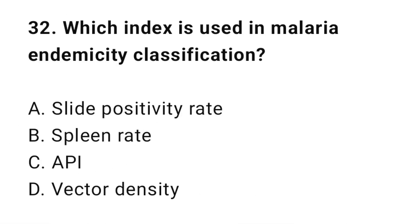Question number thirty-two: Which index is used in malaria endemicity classification? The correct option is C: AVI (Annual Parasite Index).